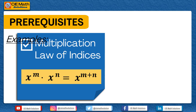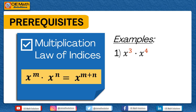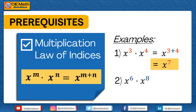For example, if we would like to multiply x raised to 3 times x raised to 4, the product is equal to x raised to 3 plus 4, adding the powers, which is equal to x raised to 7. If we would like to multiply x raised to 6 times x raised to 8, we will be adding the indices, giving us x raised to 6 plus 8, which is x raised to 14.